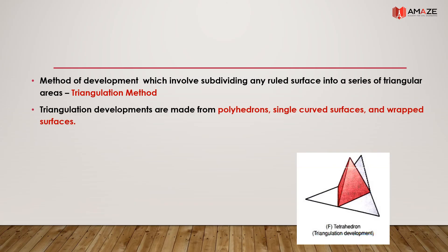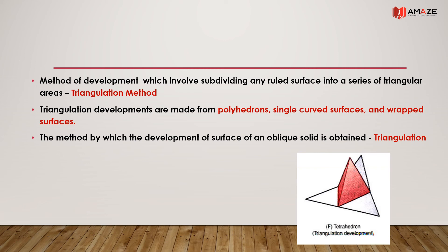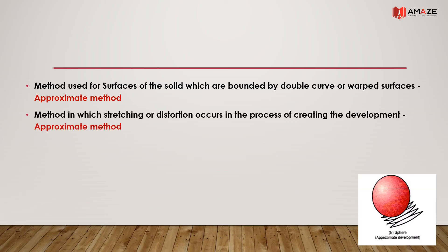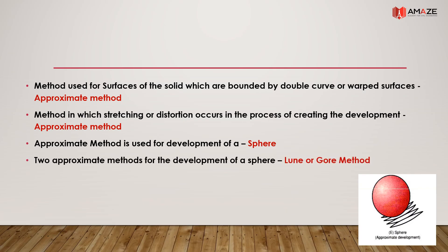Triangulation developments are made from polyhedron, single curved surfaces, and warped surfaces. The triangulation method is used for oblique solids. The method used for surfaces bounded by double curves or warped surfaces is called the approximate method. Stretching or distortion occurs in this process. The approximate method is used for the development of a sphere, with two types: the lune or gore method, and the zone method.